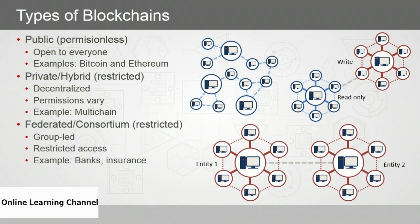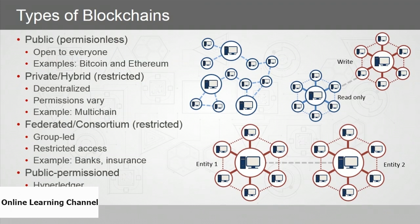In the federated or consortium model, the blockchain is restricted through access control, but the difference is it's comprised of groups — separate entities like banks or insurance companies in the same industry space forming a consortium. Then there's public permissioned, similar to the public model except users aren't anonymous and are given access through credentials. An example is Hyperledger, an open-source collaboration project created by the Linux Foundation and designed for the enterprise.